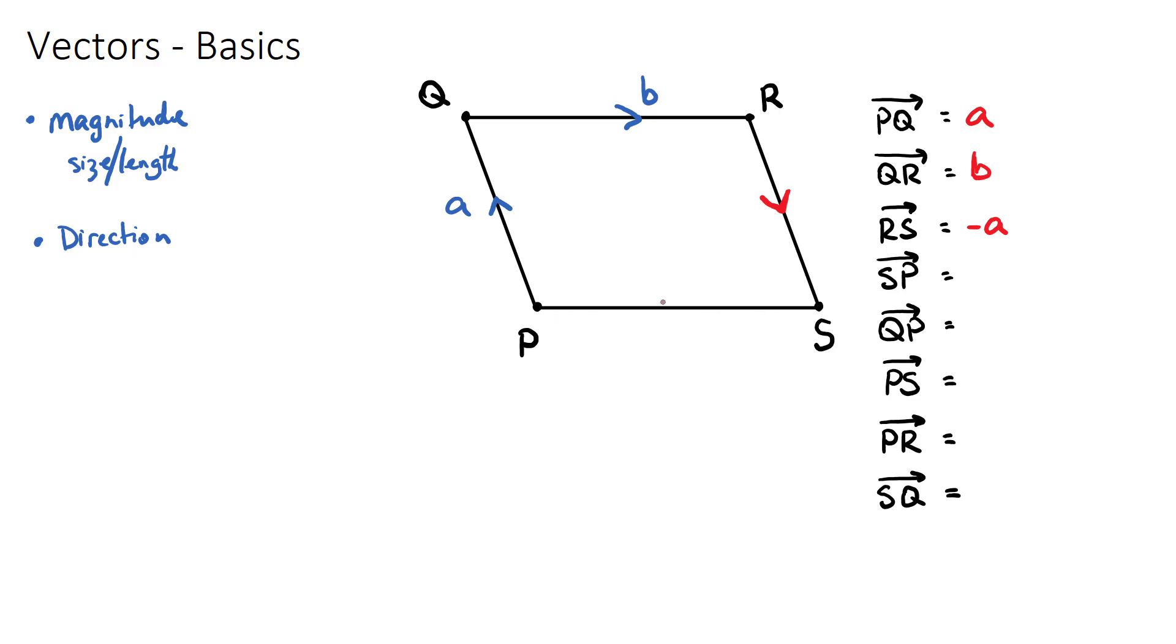And then s to p, to go from s to p, this would be the same as vector b but in the opposite direction. So this would be negative b. Now if we want to go from q to p, this would just be the same as vector a but in the opposite direction. So this would be negative a.